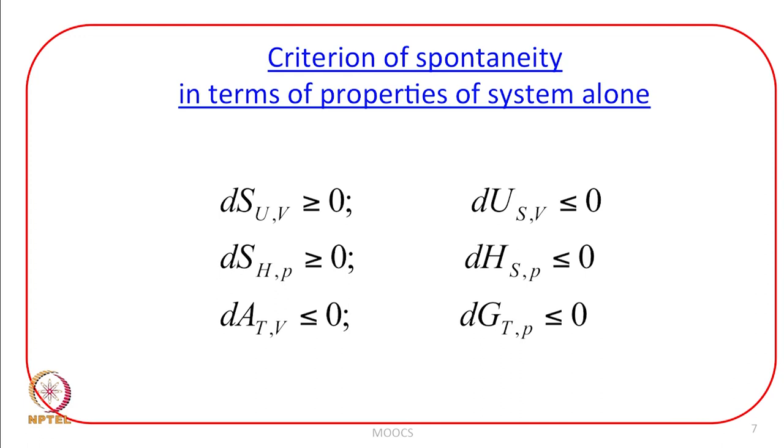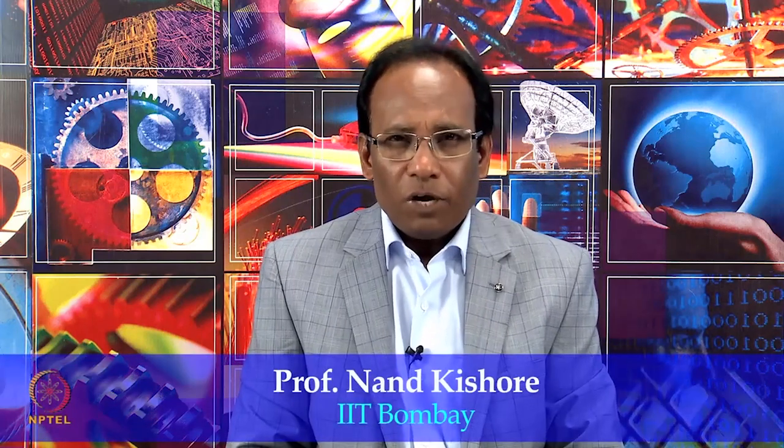There are six criteria of spontaneity in terms of properties of the system alone: in terms of entropy, internal energy, enthalpy, Helmholtz free energy, and Gibbs free energy. dG at constant temperature and pressure ≤ 0 is the most widely used criterion because it is easy to carry out processes at constant pressure. All these criteria obey the second law of thermodynamics. The changes in entropy provide a lot of information, and the criteria of spontaneity are very useful for predicting whether a process is feasible at a given condition. Thank you very much.